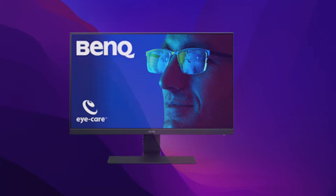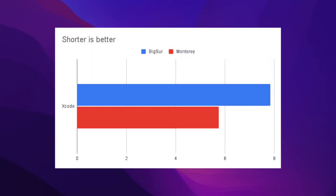All tests are performed while connected to an external 1080p display of 27 inches via DisplayPort. Here are the results. First, Xcode: in Big Sur it took 7.84 seconds, whereas in Monterey it took 5.76 seconds. A simple app was created using Xcode, and after letting all installation indexing complete, a test run was done on a physical device. Time is recorded on the second run on the same device.